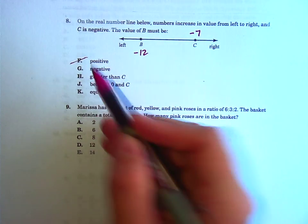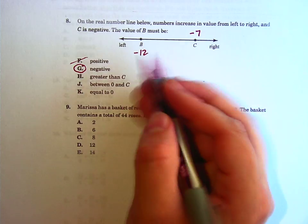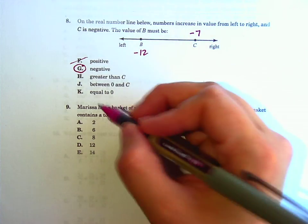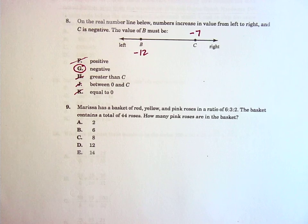Maybe it's like negative 12. All right, so is B positive? No. Is B negative? Yes, it is. Is it greater than C? No. Is it between 0 and C? No, because 0 is over here, because we're already negative numbers. Is it equal to 0? No, these are all silly. So, G.